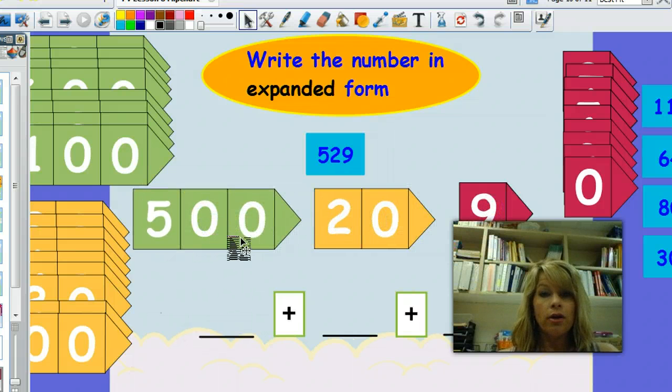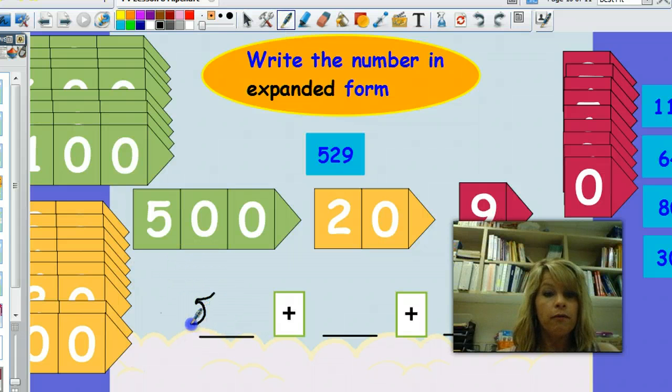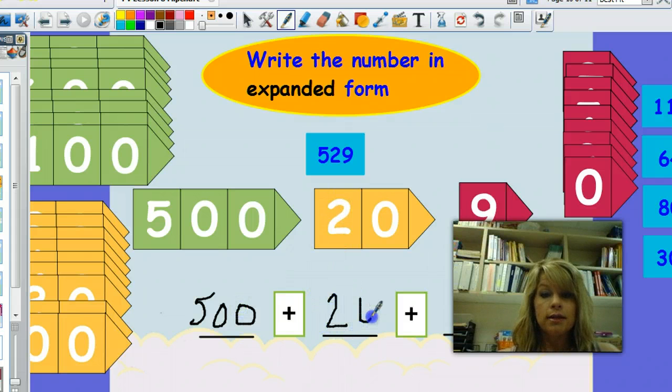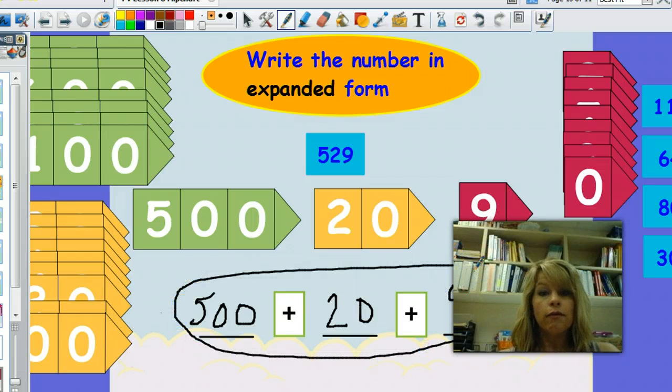So then I'll break it apart. I'll expand it. And here are my parts to the number, my place value parts. I have the hundreds, which is 500. I have 20 for the tens, and I have 9. So right here is what we call expanded form. 529 is the same as 500 plus 20 plus 9.